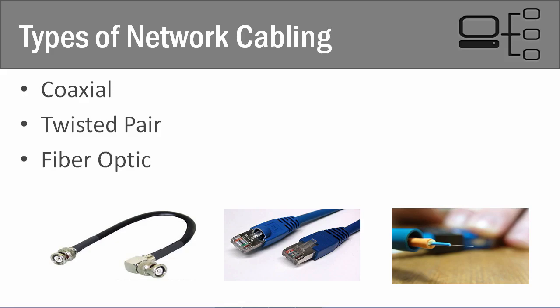In this video, we're going to do a quick introduction to the different types of networking cabling that you're going to see out in the networking world. The first one is coax cable. Coax cable is not a very common networking cable — it was used quite widely in early networks, but you rarely see it in use today.